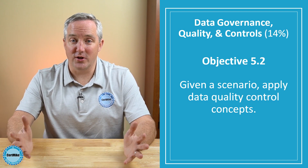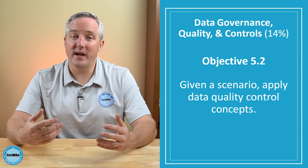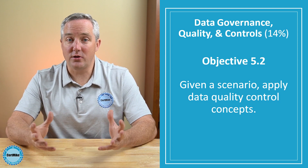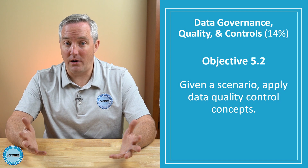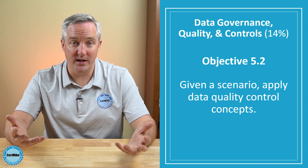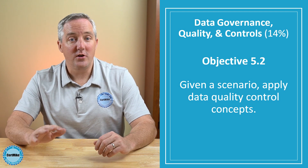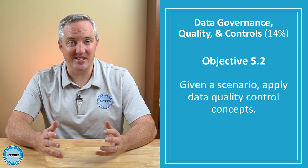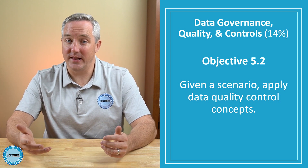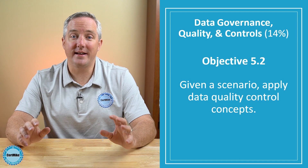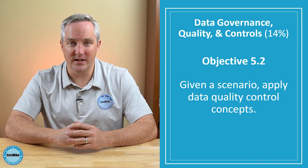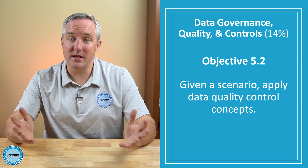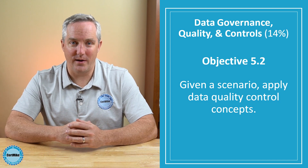In the second objective for domain five, you'll be asked to apply data quality control concepts. These include understanding how to check data quality both manually and using automation. You'll be expected to know the five dimensions of data quality: consistency, accuracy, completeness, integrity, and attribute limitations. You'll need to understand data quality metrics and the methods used to validate data quality.